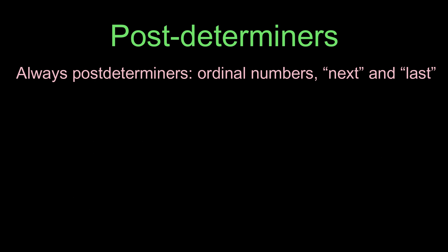Ordinal numbers and the words 'next' and 'last' are always post-determiners since they come after the word 'the,' 'a,' or a possessive. For example: 'The first 30 years,' 'The next three days,' 'The last three days,' 'At the next stop,' 'The first thing,' 'These last few days.'